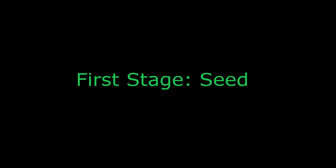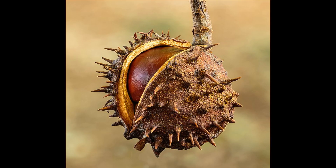First stage: seed. The life cycle of a flowering plant starts with a seed. A seed is a fertilized and mature ovule. It consists of a miniature plant, called an embryo, in a protective coat. In most plant species, the seed also contains food reserves for the embryo.